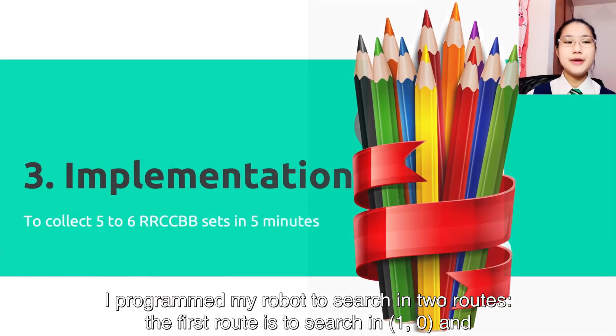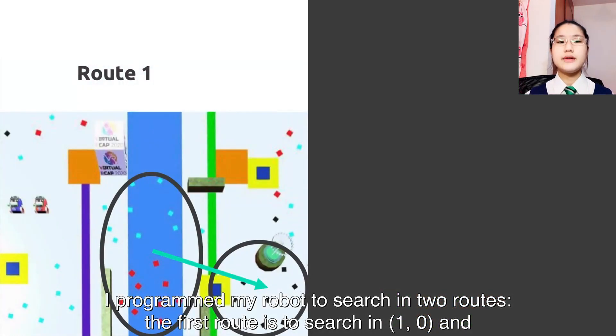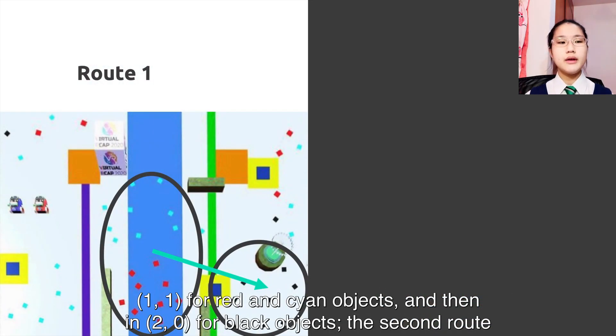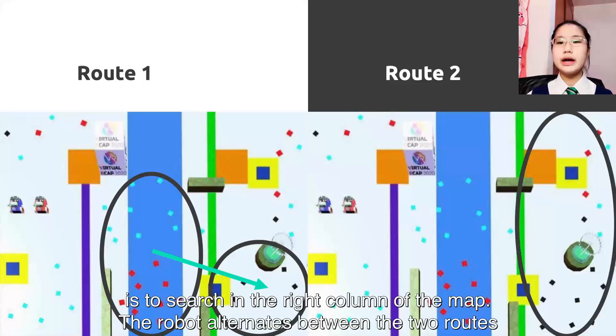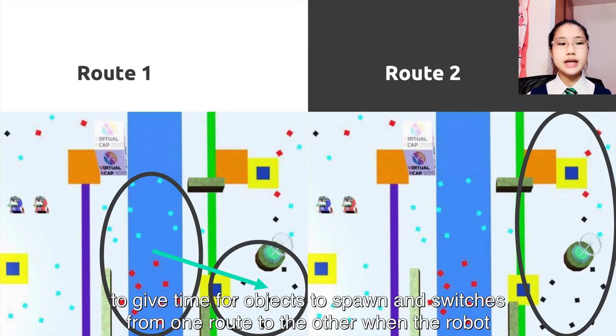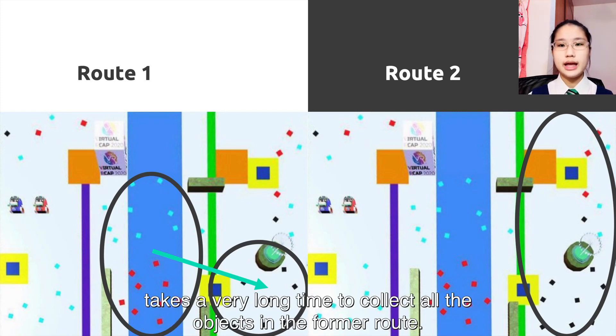Implementation: I programmed my robot to search in two routes. The first route is to search in 1-0 and 1-1 for red and cyan objects and then 2-0 for black objects. The second route is to search in the left column of the map. The robot alternates between the two routes to give time for objects to spawn and to switch from one route to the other when the robot takes a very long time to collect all the objects in the former route.